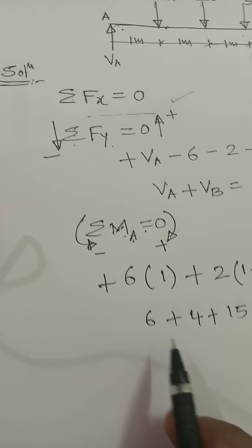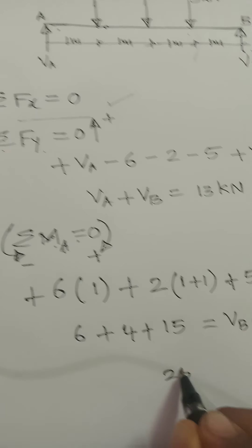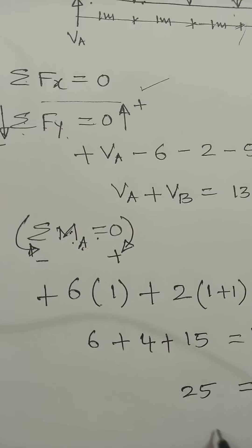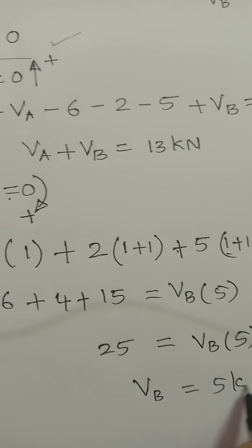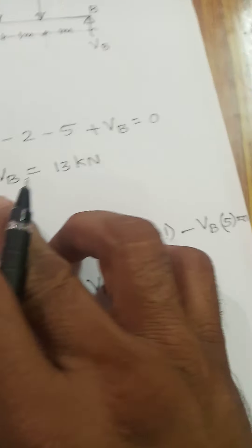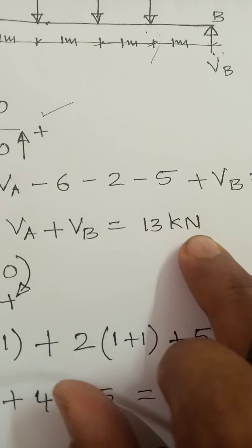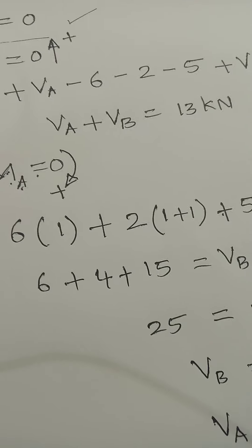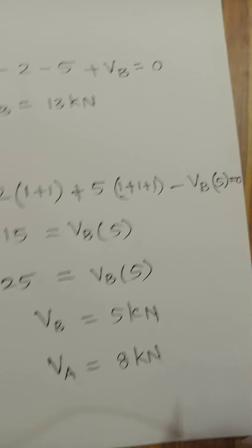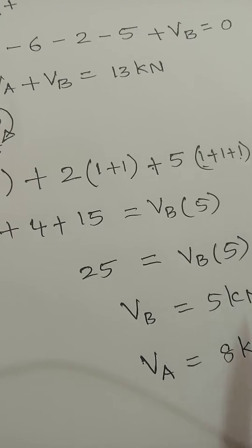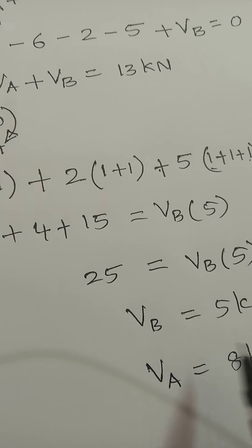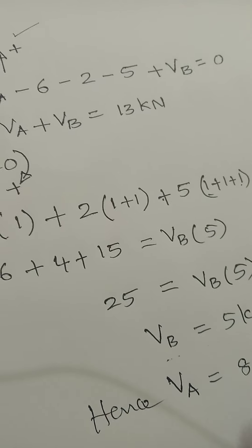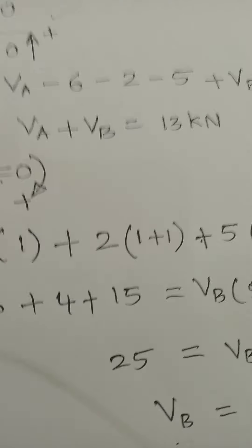Since we have calculated that Va plus Vb equals 13 kilonewtons and Vb equals 5 kilonewtons, we can calculate Va as 13 minus 5, which equals 8 kilonewtons. So the vertical reaction at A is 8 kilonewtons and at B is 5 kilonewtons.